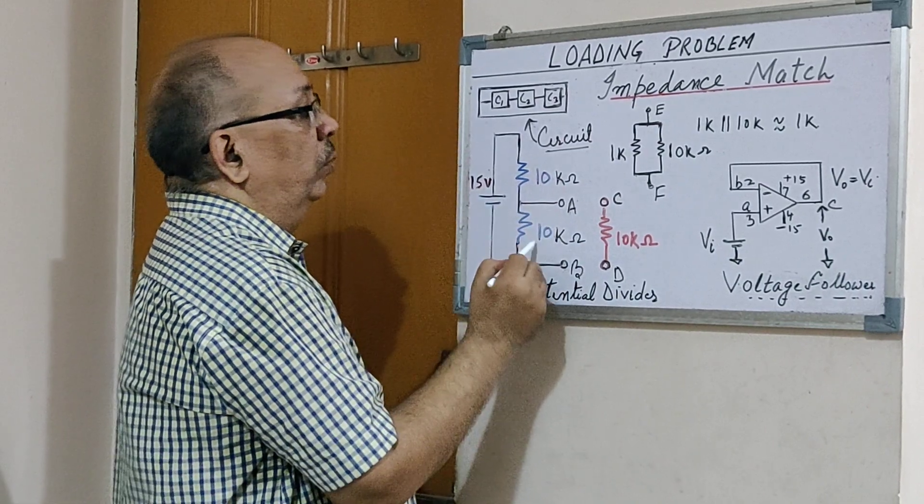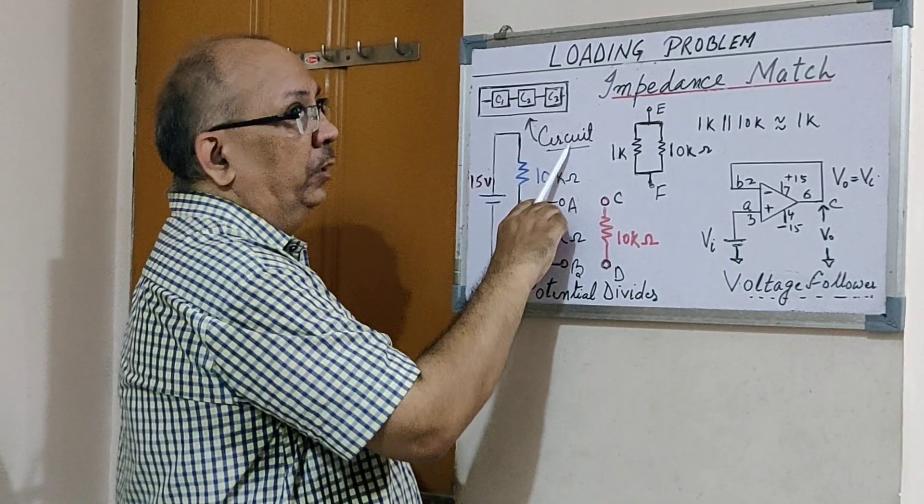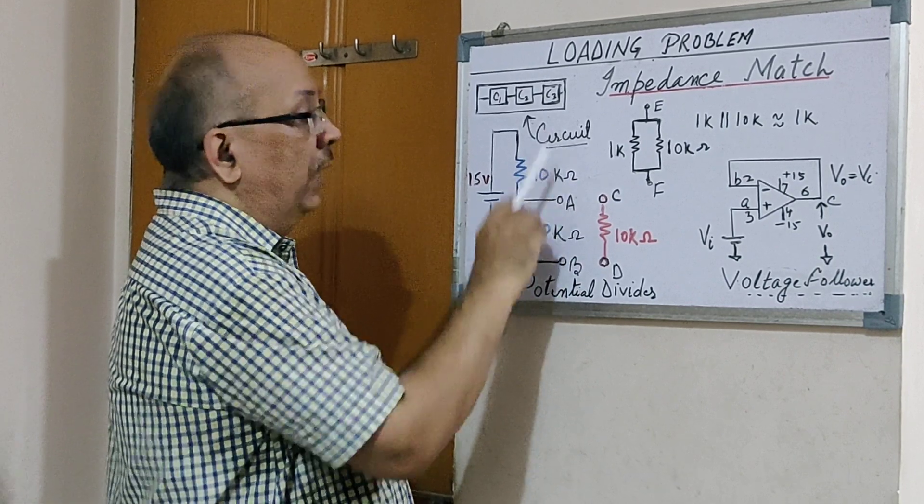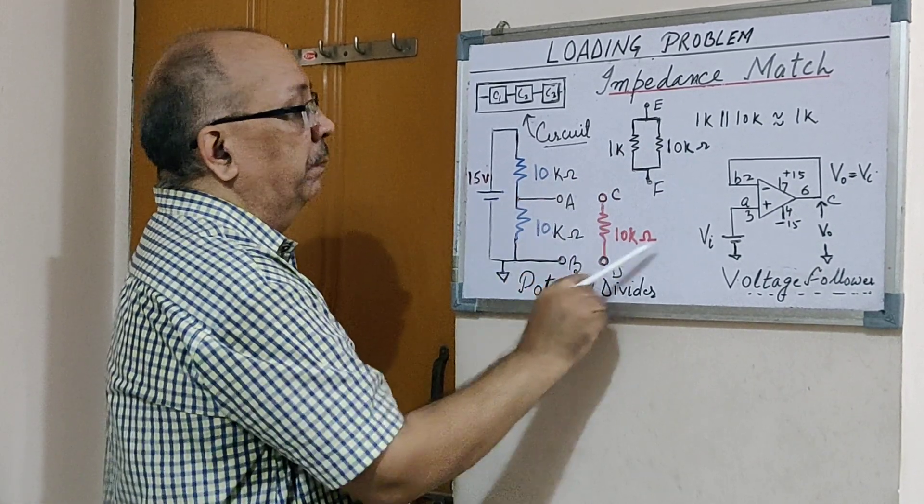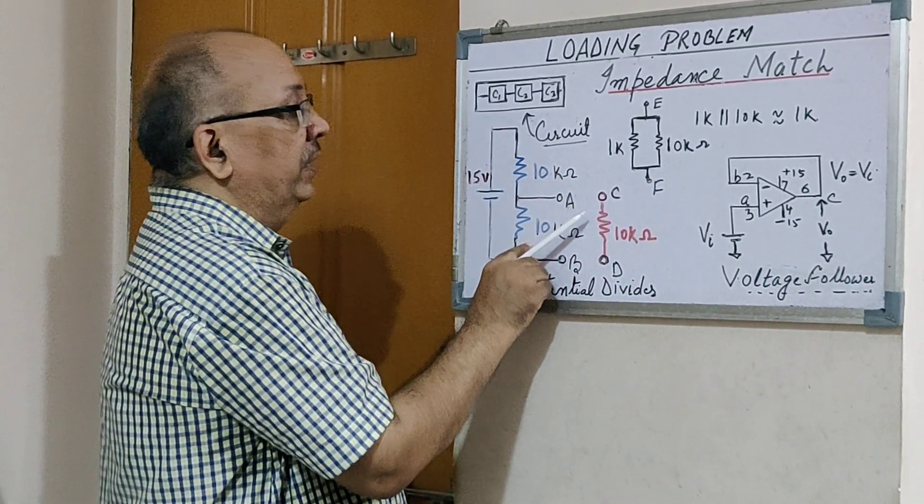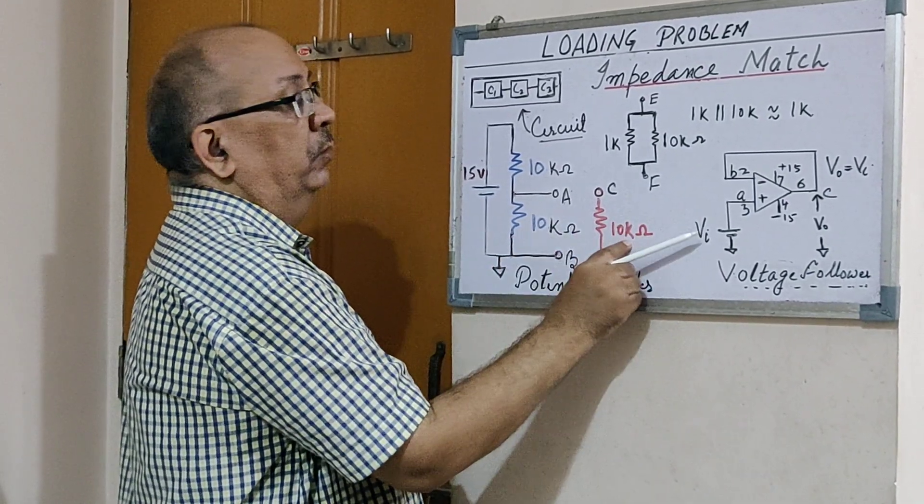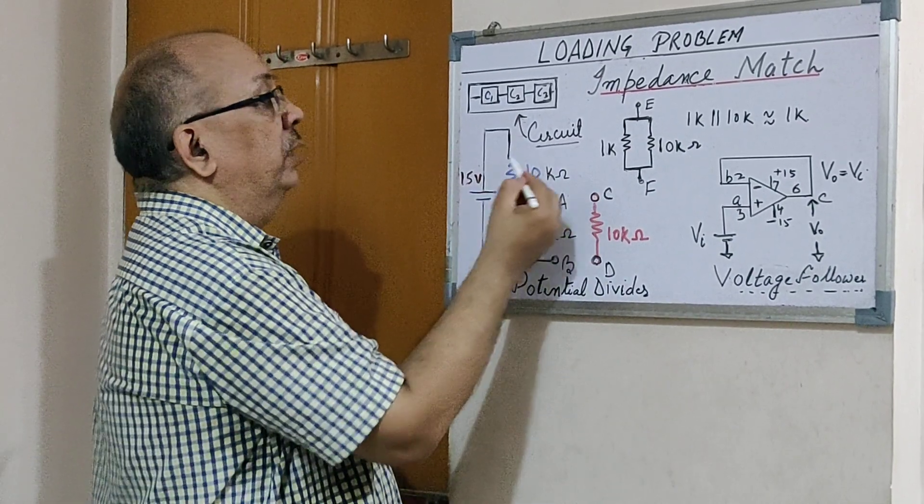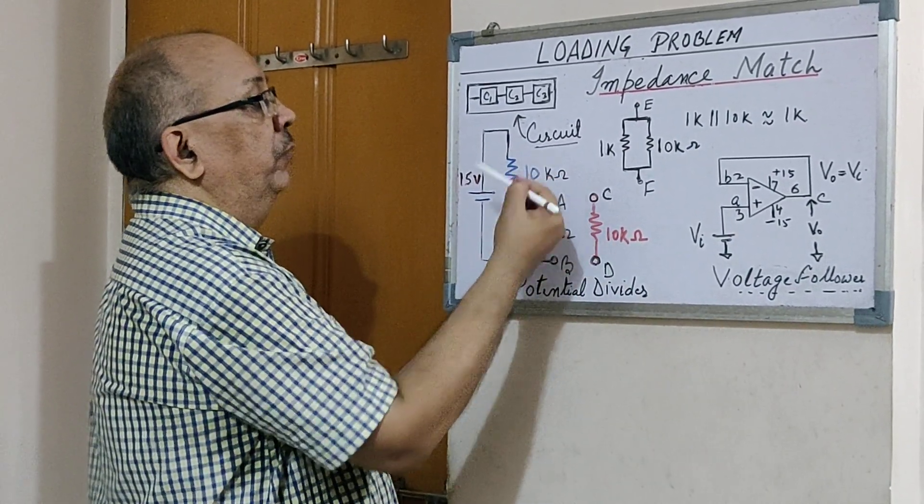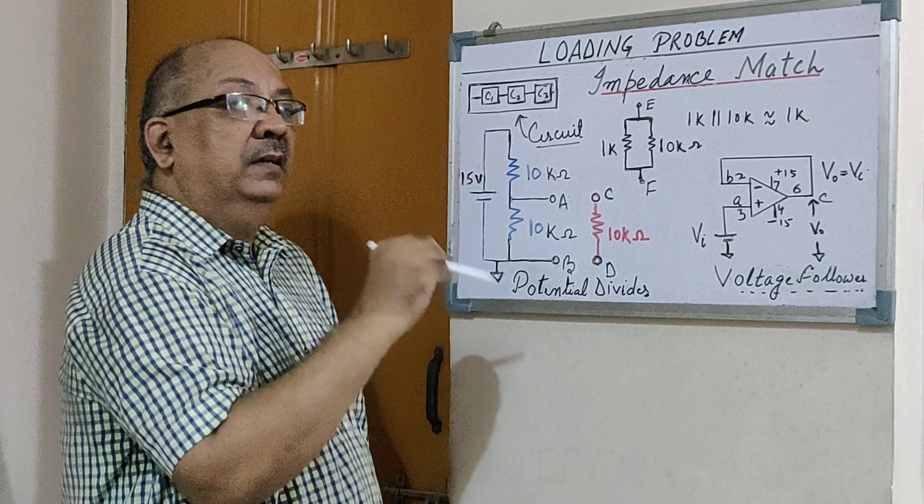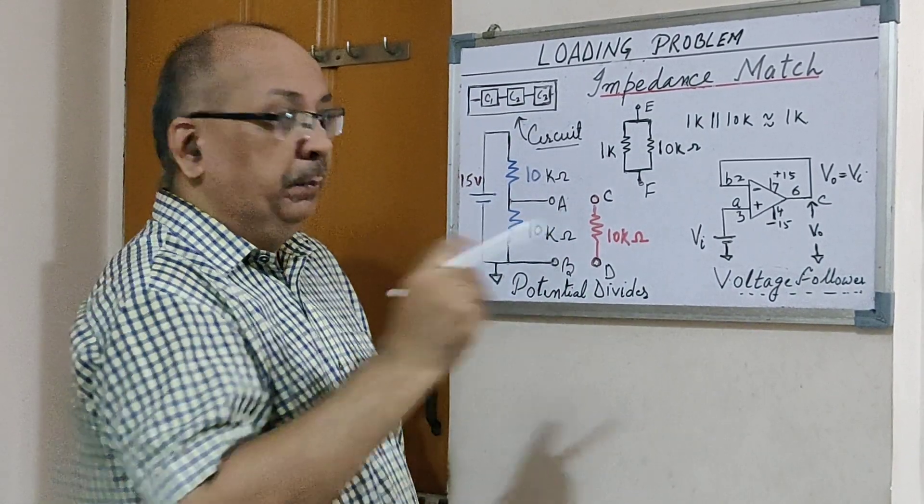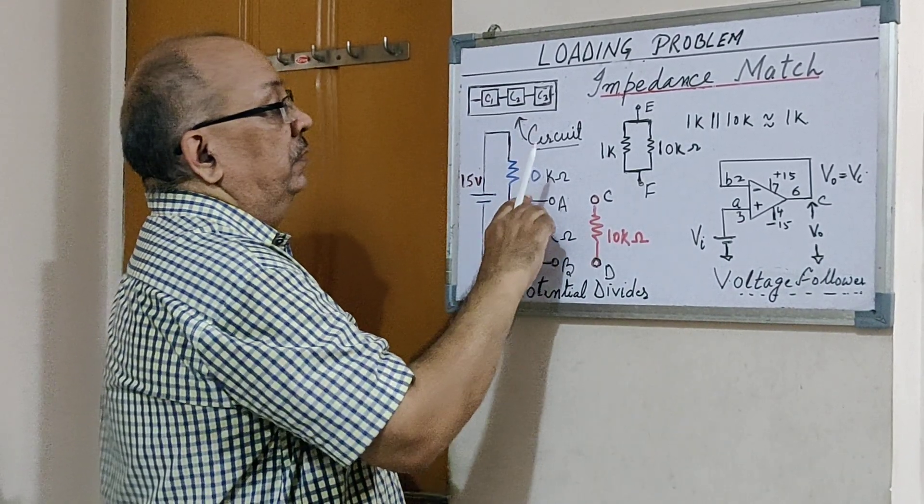A and C, and B and D, this being 1k and this being 10k, this resistance is very low compared to this. The effective resistance will remain 1k, and the potential which was divided as 7.5 volts will remain 7.5 volts. That means the circuit from which the voltage is coming and the circuit to which the voltage is going—the output